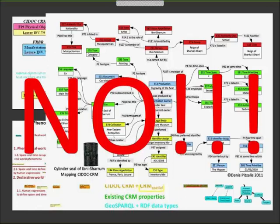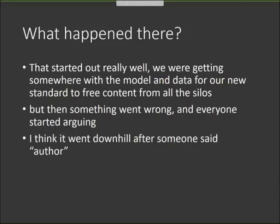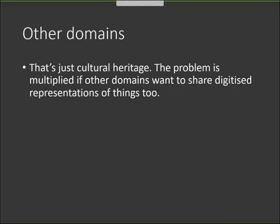Our standard is confusing what's important about getting pixels onto the screen. What happened in that explosion of complexity in our model? It started off really well — our data was looking good about how to have an interoperable standard for freeing content from the silos. But then it got more and more complex. People started arguing with each other. I think it may have gone wrong when someone said the word 'author.' That problem illustrates the challenge of producing interoperable digital objects — there are so many ways to describe things, and from scientific domains like medicine, there are going to be all sorts of other models people want to associate with their digitized objects.